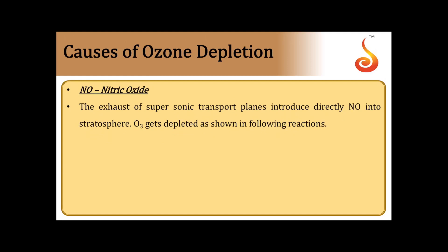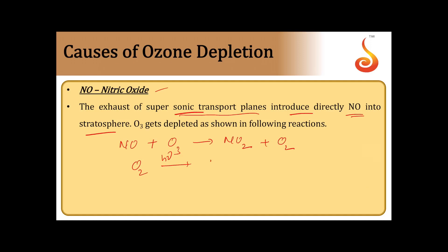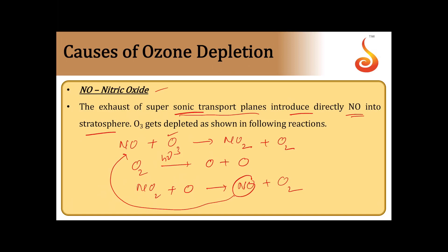Nitric oxide also causes depletion of ozone. The exhaust of supersonic transport planes introduces NO directly into the stratosphere. NO reacts with O3 to form NO2 and O2. In sunlight, O2 forms two oxygen atoms. NO2 reacts with an oxygen atom to form NO and O2 again — the cycle continues, continuously depleting the ozone layer. The main culprits for ozone depletion are nitric oxide and freons.